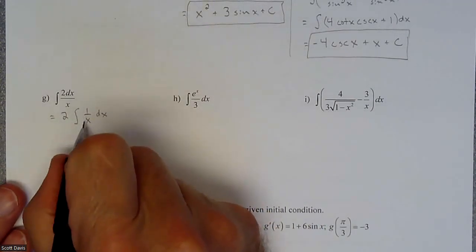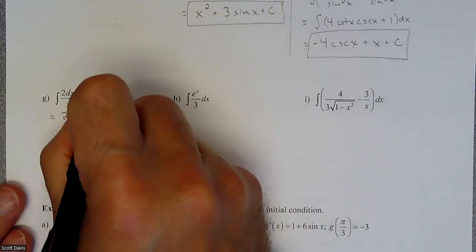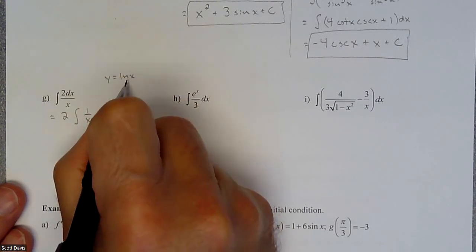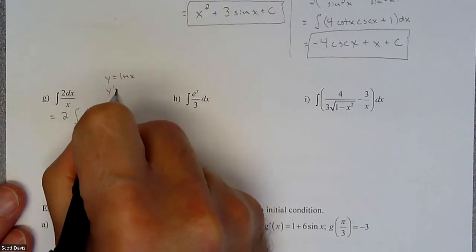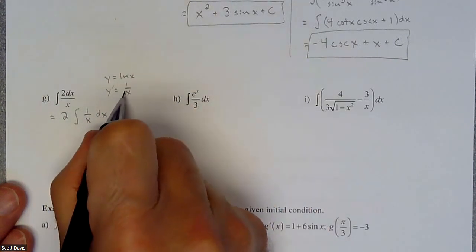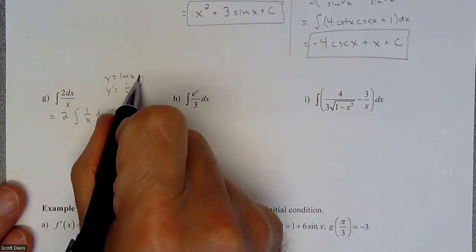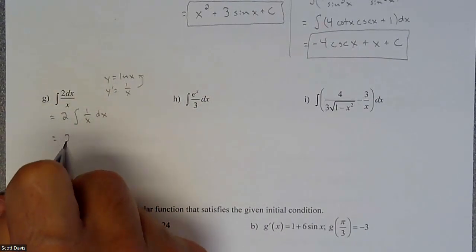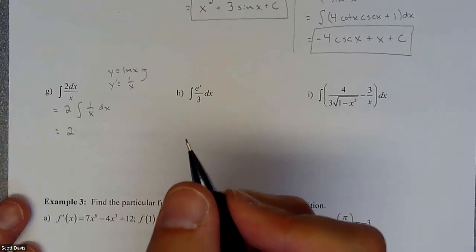So here's what I got going on. This one over x looks familiar to me, and it is when you have originally a natural log, and you do the derivative of it, you get a one over x. So we're going backwards. So then when we were to do the antiderivative of this, two would still be there.